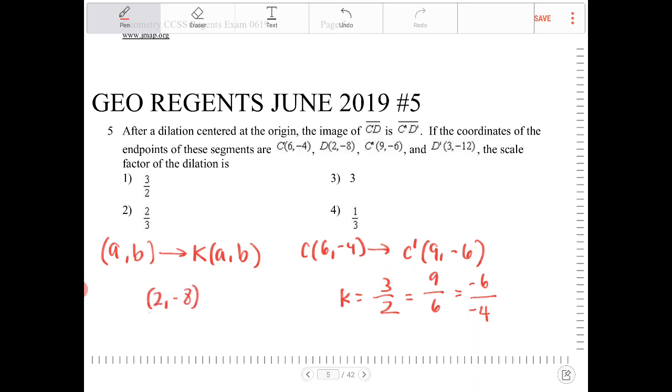I take 2 comma negative 8 and I multiply this by 3 halves, you should end up with 3 comma negative 12. And is that really the case? That is indeed the case. So the scale factor here is 3 halves.